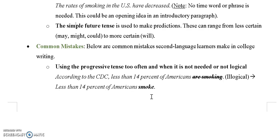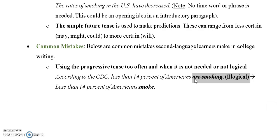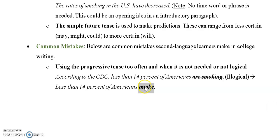Here are some common mistakes you might have made in your writing. One is using the progressive tense too often when it is not needed or not logical. For example: 'According to the CDC, less than 14% of Americans are smoking.' That's strange — does that mean they are in the process of smoking right now at this very moment? This is a factual statement; we need to use the simple present tense. In speech we often use the progressive, but in factual statements in academic writing, the simple present tense is sufficient.